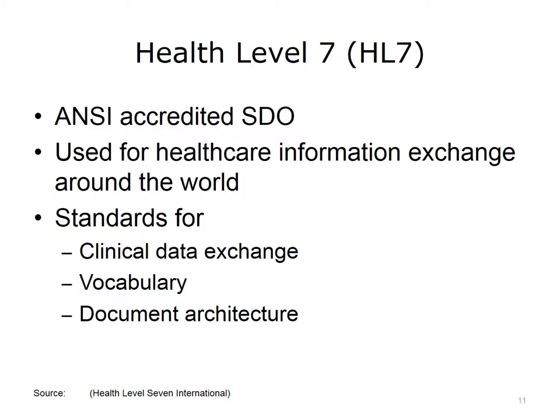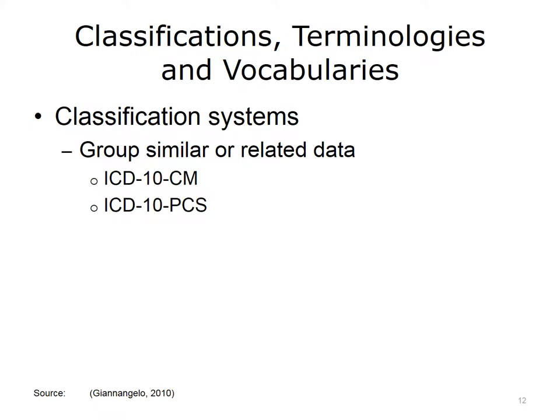Now let's look at some standardized terminologies. We need to distinguish between classifications, terminologies, and vocabularies. Classification systems are designed to group similar or related data, and one use is for external reporting for purposes including reimbursement. One example is the International Classification of Diseases, 10th Revision, Clinical Modification, known as ICD-10-CM, used for reporting the principal diagnosis for which a patient is admitted and other diagnoses which affect care. ICD-10-CM is also used to report the reason the patient is seen in the outpatient setting, grouping asthma diagnoses together under the same category code.